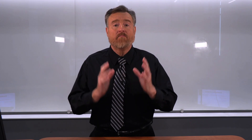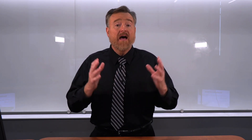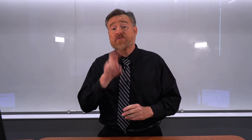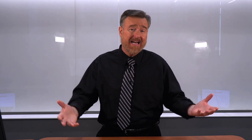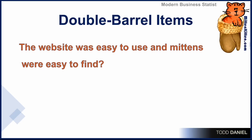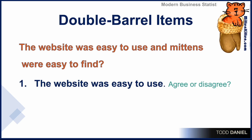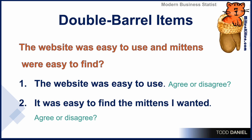Look out for double-barrel questions. A double-barrel question asks two things instead of one, and it confuses the test takers and leaves you with answers that aren't usable. For example: the website was easy to use, and the mittens were easy to find. This should be broken down into two separate questions: number one, the website was easy to use — agree or disagree? And then a second question: it was easy to find the mittens I wanted — agree or disagree?